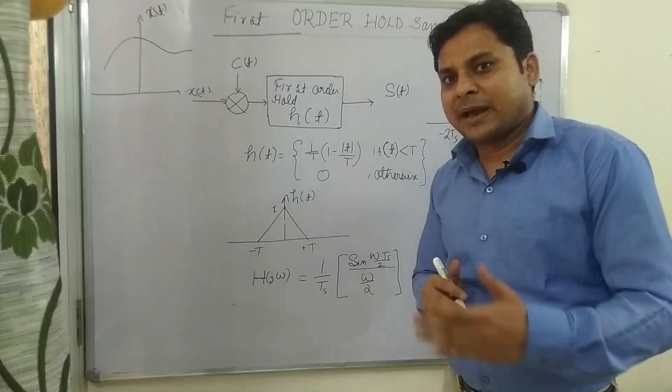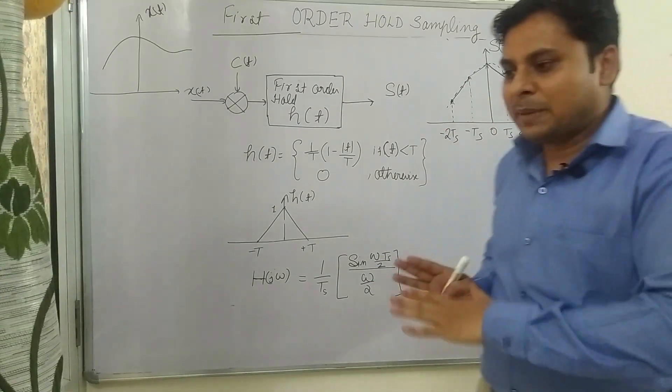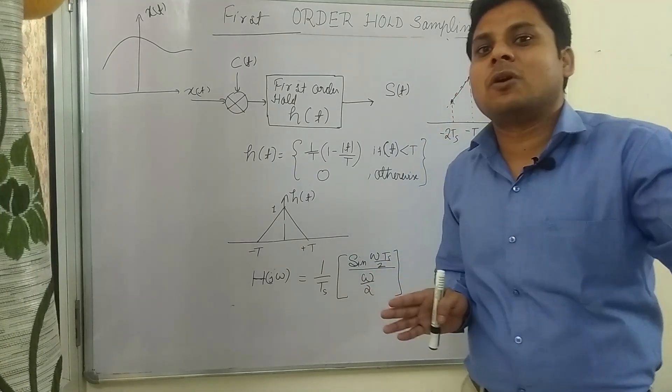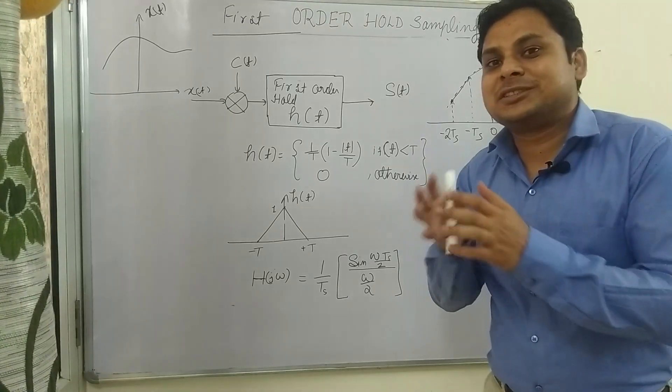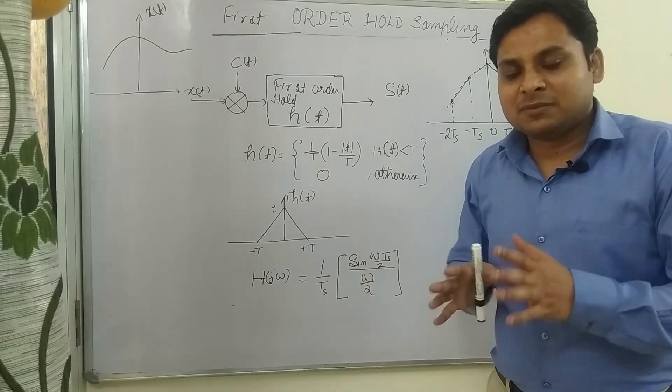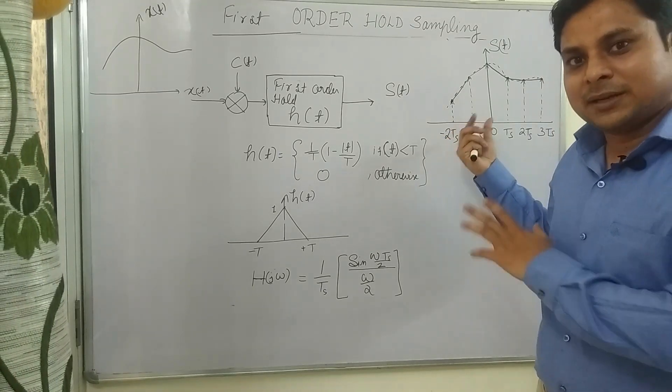by comparing this sampled signal with the sampled signal of zero-order hold, the samples were very much distorted in comparison to this one. Distortion is there, but in this signal the distortion is very small. You can observe it. So in this way, in first-order hold